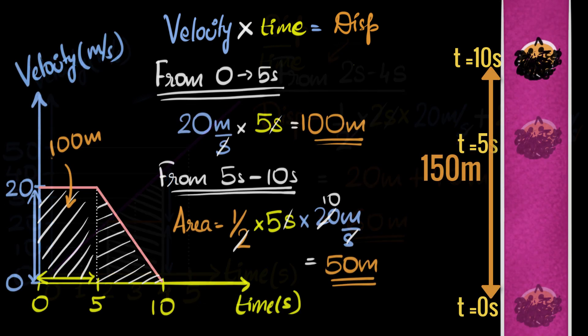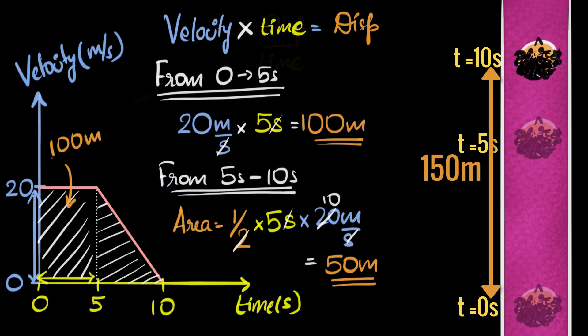So the moral of the story is: if your cousins ever provide you a velocity time graph representing their kid's motion, you can figure out how far they walked just by calculating the area under that graph.